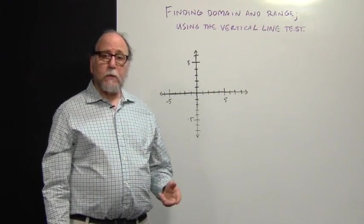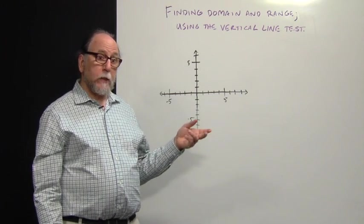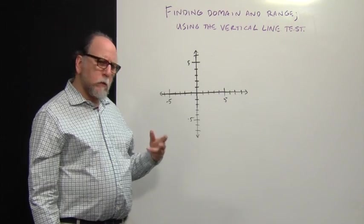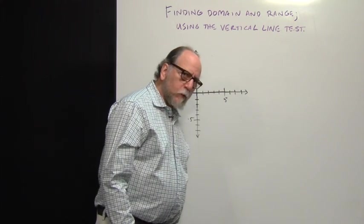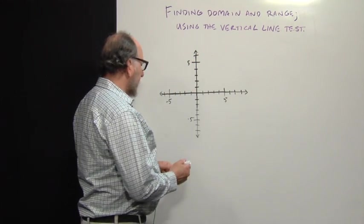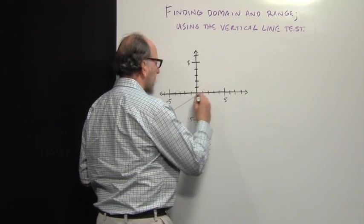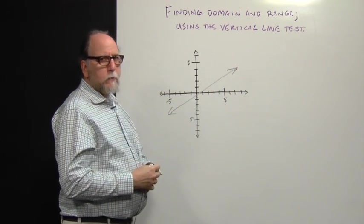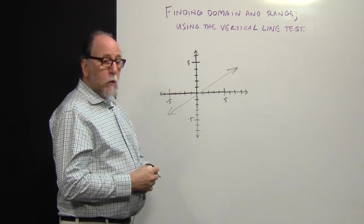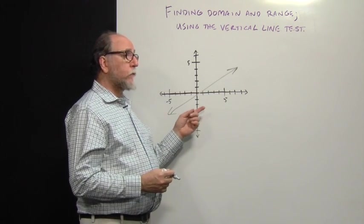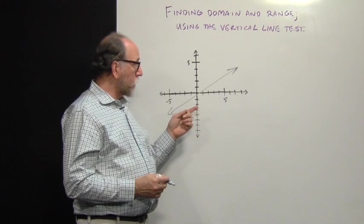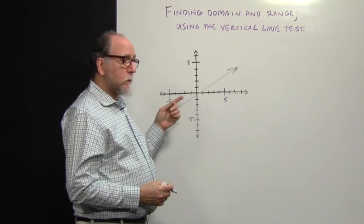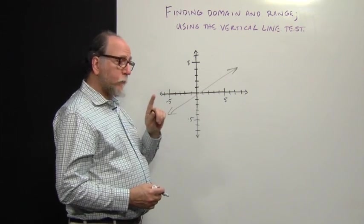We've seen two graphs of relations that were not functions. I want to talk to you a little bit about linear functions, though. Linear functions have graphs that look like this that are straight lines. And all straight lines on the graph, or linear relations, are linear functions except for one.